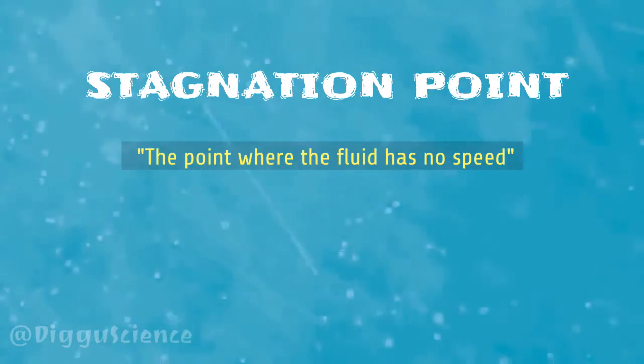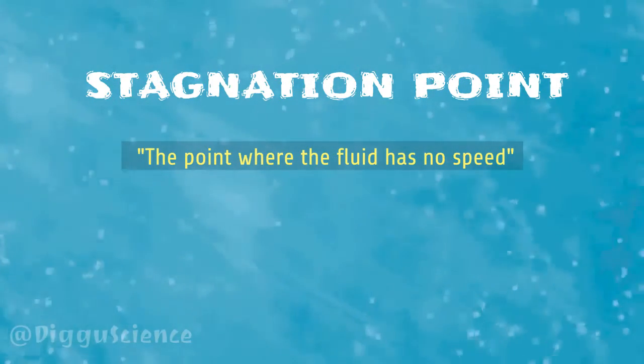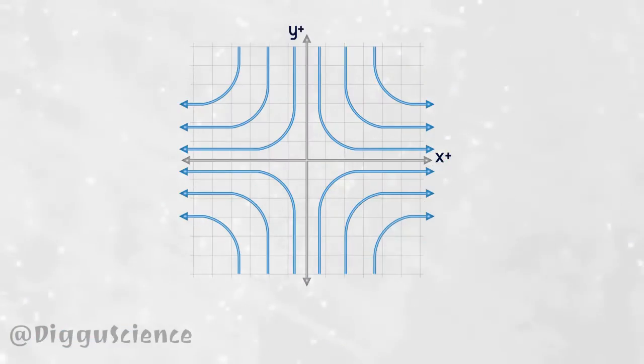The stagnation point can be defined as the point where the fluid has no speed. As an illustration, in the following fluid flow, point 0 is not passed by the streamline. Thus, at this point, the fluid has no speed.